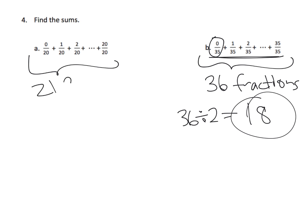Here, we have 21 fractions. So, we take 21, we divide by two, and we end up with ten and a half. So, if we were to add all those fractions, we'd get ten and a half. If we were to add all these fractions, we would get 18. Beautiful and simple little pattern.